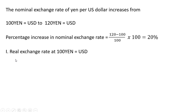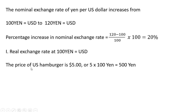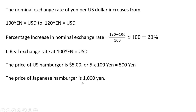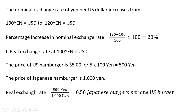So what's going to happen to the real exchange rate? The real exchange rate at 100 yen equals 1 US dollar is as follows. We're going to take the price of a US hamburger — we'll assume it's $5 — and convert that into yen. Given our original exchange rate of 100 yen equals 1 US dollar, we multiply 5 by 100 to get 500 yen. Assuming the price of a Japanese hamburger is 1000 yen, the real exchange rate is 500 yen divided by 1000 yen, or 0.5 Japanese burgers per one US burger.